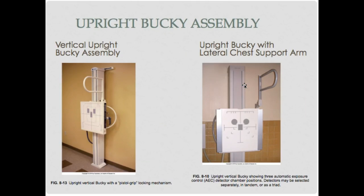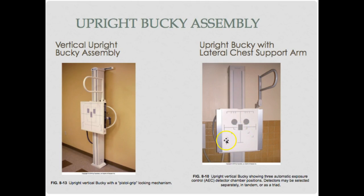The vertical upright Bucky assembly comes in two types with different locking mechanisms. You can see the photo timer cells — two outer cells for the chest and the center one for a lateral chest. Use these photo cells and make sure you're centered properly. The tick marks and lines indicate different cassette sizes.